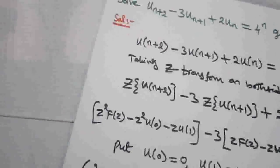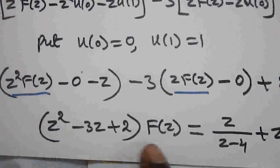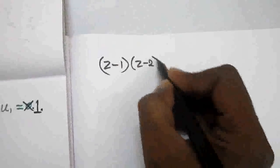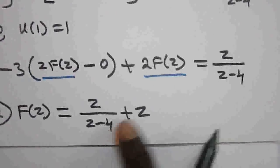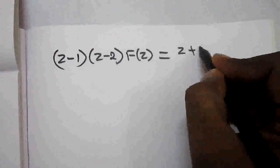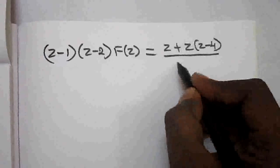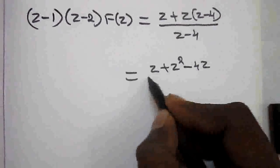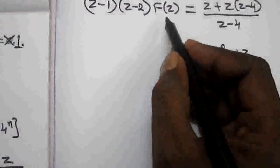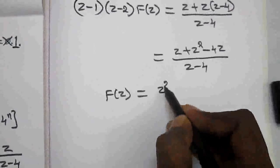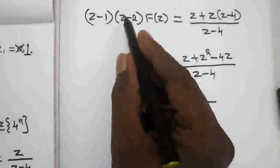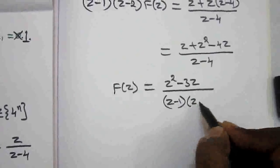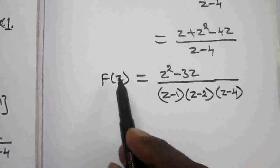Factorizing z² minus 3z plus 2 gives (z−1)(z−2). Taking LCM on the right hand side: z plus z(z−4), divided by (z−4), gives z² minus 3z all over (z−4). Therefore F(z) equals (z² minus 3z) divided by (z−1)(z−2)(z−4).